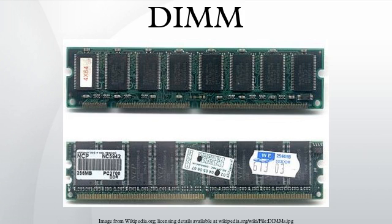Most DIMMs are built using x4 or x8 memory chips with 9 chips per side. x4 or x8 refer to the data width of the DRAM chips in bits. In the case of x4 registered DIMMs, the data width per side is 36 bits, so the memory controller needs to address both sides at the same time — making a two-sided module single-ranked. For x8 registered DIMMs, each side is 72 bits wide, so the memory controller only addresses one side at a time. This applies to ECC memory which stores 72 bits instead of the more common 64, with one extra chip per group of eight.